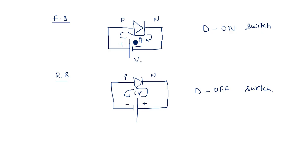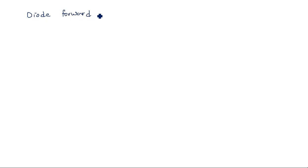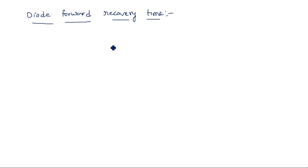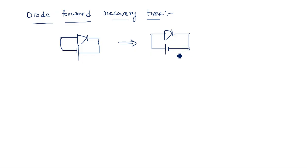The first switching characteristic is the diode forward recovery time. Assume the diode is in reverse bias condition. Now I apply positive supply to the p-type terminal and negative supply to the n-type terminal. The time taken by the diode to come from reverse bias to forward bias condition is called the diode forward recovery time.